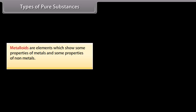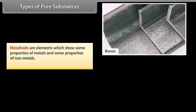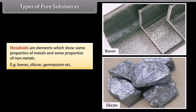Metalloids. Metalloids are elements which show some properties of metals and some properties of non-metals. Like boron, silicon, germanium, etc.